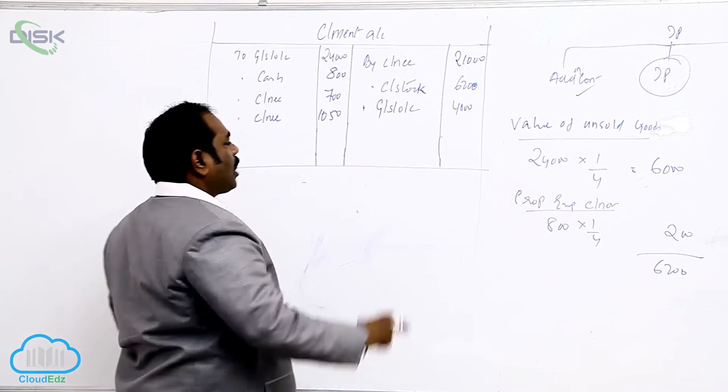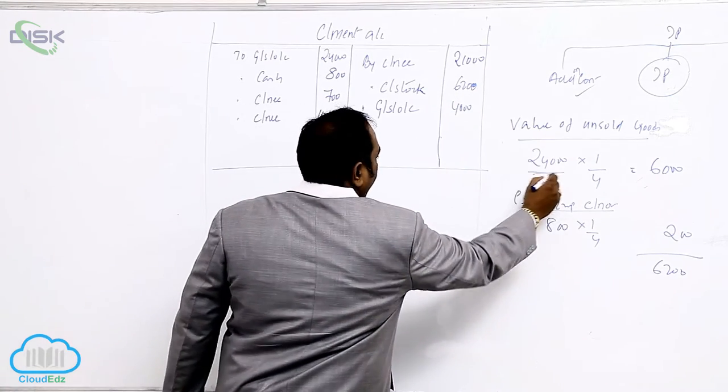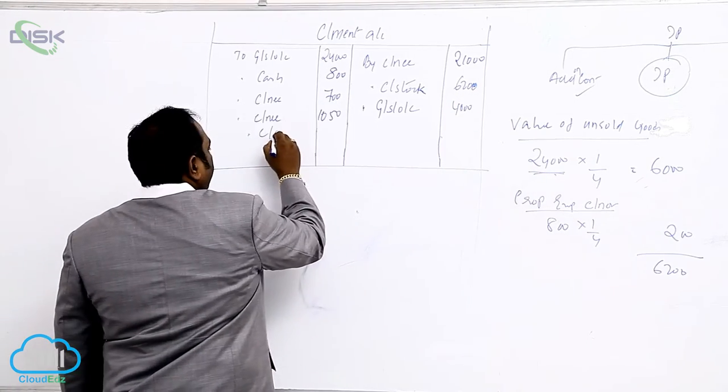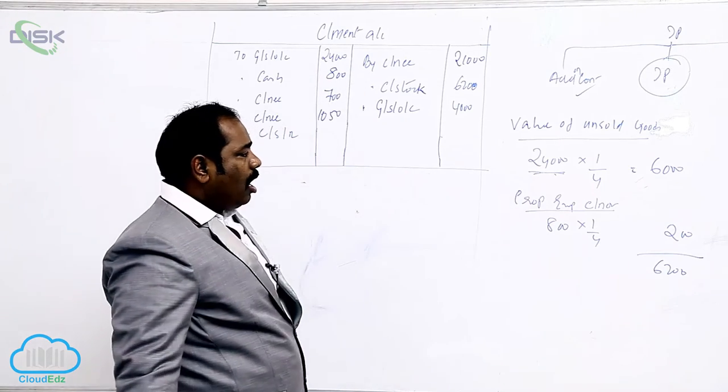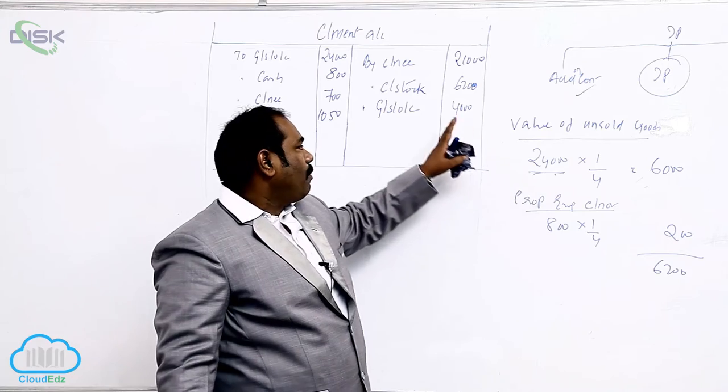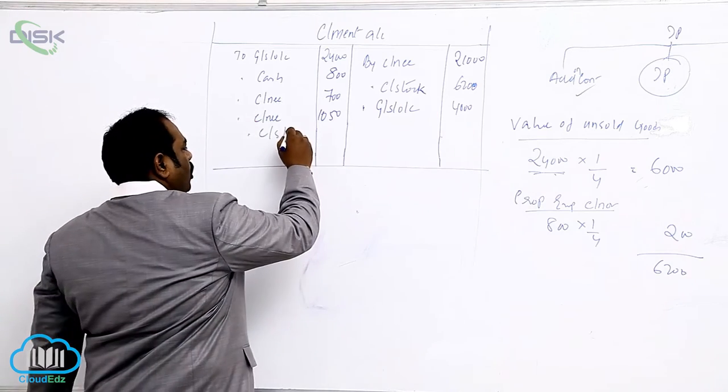Now you need to calculate, because unsold stock is valued at invoice price. Whenever you value unsold stock at invoice price, that has to be unloaded. How to unload the consignment stock? To consignment stock reserve.